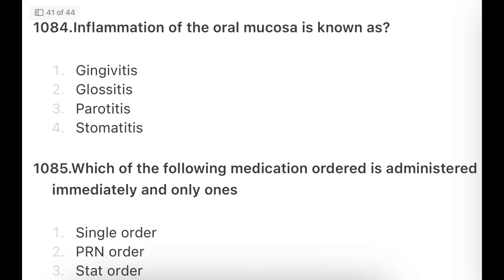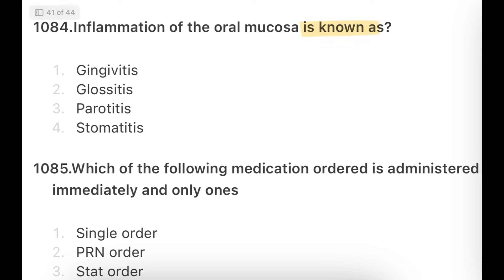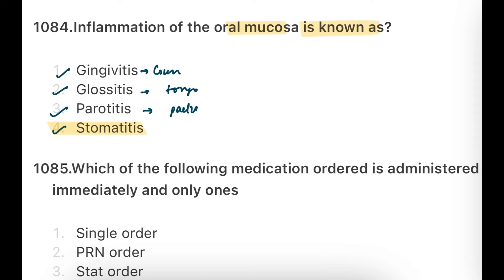Next question: Inflammation of the oral mucosa is known as? Options: Gingivitis, Glossitis, Parotitis, Stomatitis. The answer is Stomatitis — that is inflammation of the oral mucosa. Gingivitis is inflammation of the gums, Glossitis is inflammation of the tongue, and Parotitis is inflammation of the parotid glands. Let's clear each question properly.